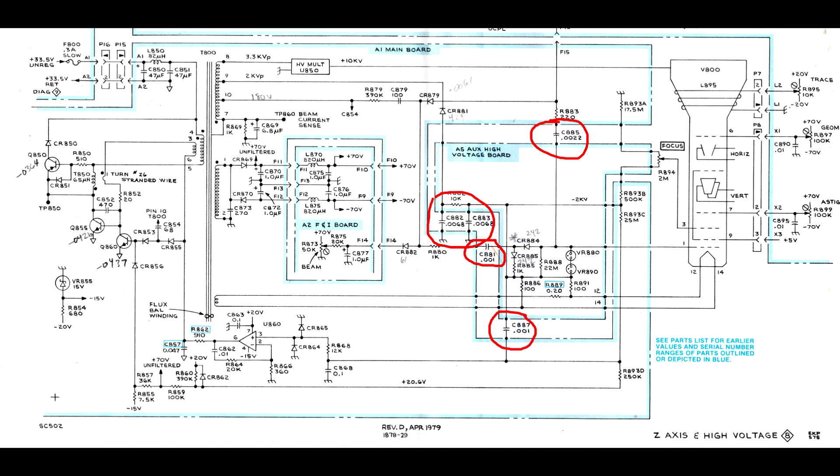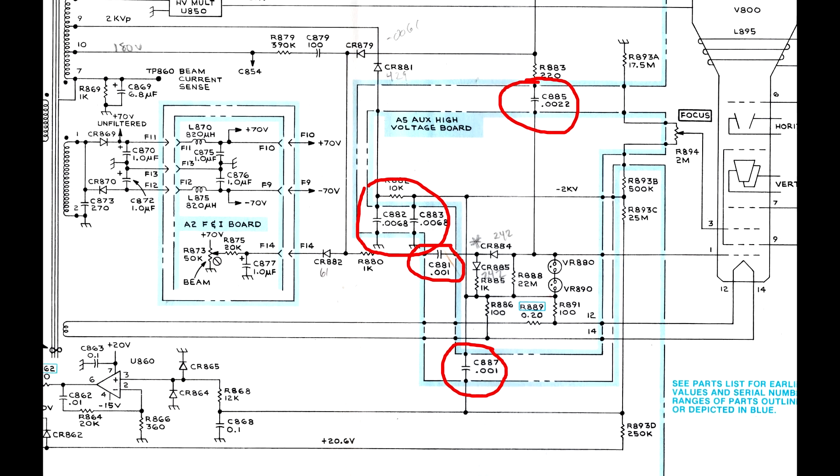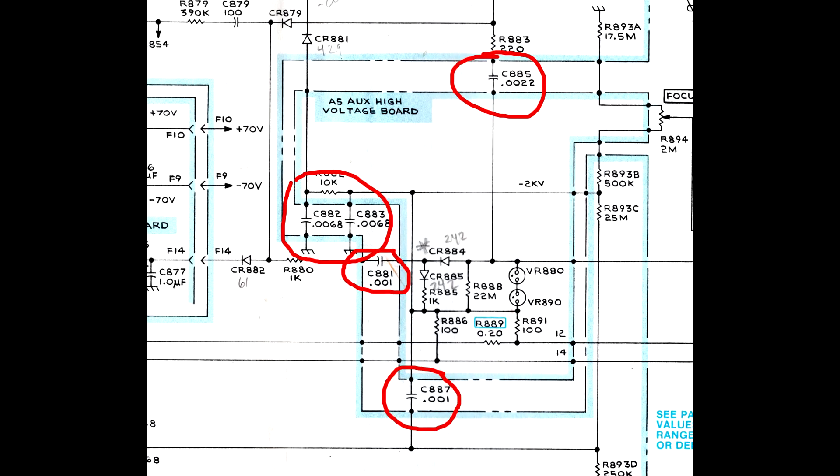While I was editing this video, the topic of intensity control problems on the SC502 has shown up on Techscope's group. I find that I had a problem with that on an SC502 and the problem was the one or more of the five capacitors in the DC restore circuit, which are outlined here.